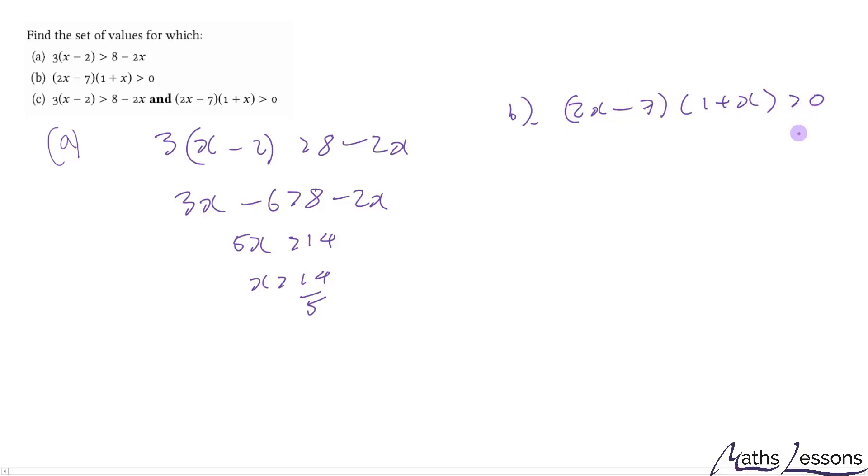If we consider an inequality, its boundaries must be where it equals 0. So we want to know where it equals 0. So where it equals 0, we'll have x equal to 7 over 2 or x equal to minus 1. That will give us our boundary values.